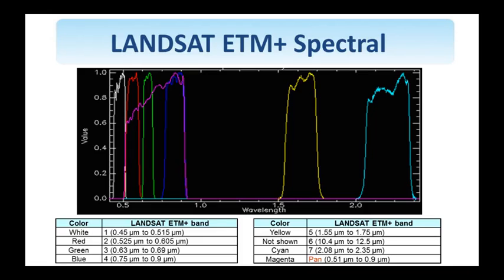The Landsat program is responsible for the acquisition of satellite imagery of the Earth. It started in 1972 and the most recent satellite, Landsat 8, was launched this year. Landsat 7 data has 8 spectral bands with spatial resolutions ranging from 15 to 60 meters, and a temporal resolution of 16 days. The main instrument on board Landsat 7 is the Enhanced Thematic Mapper Plus, or ETM Plus. The resolution is 30 meters, except Band 6 at 60 meters and Band 8 at 15 meters.